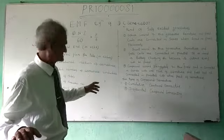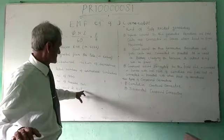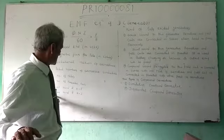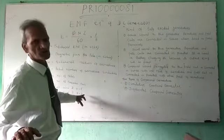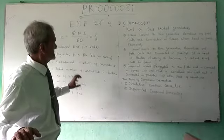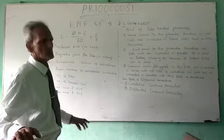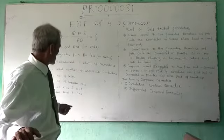There are two conditions mentioned. In lap winding, A will be equal to P, but in wave winding, A is equal to 2. This value depends upon the nature of winding in the armature coil.